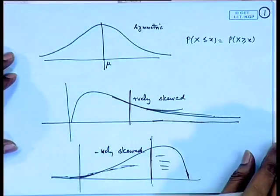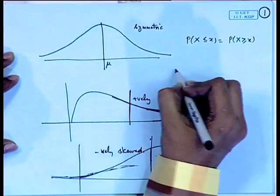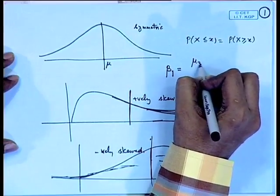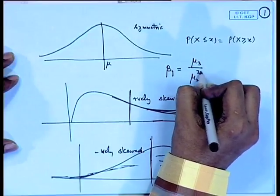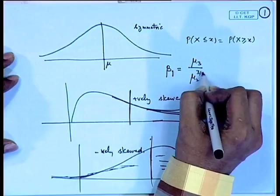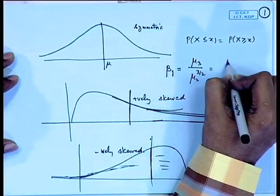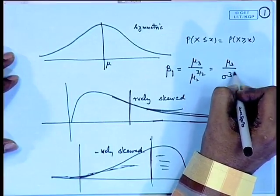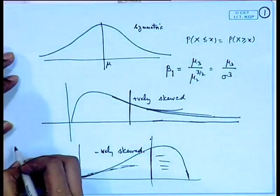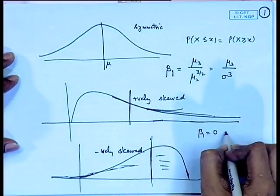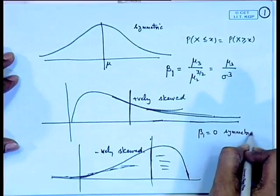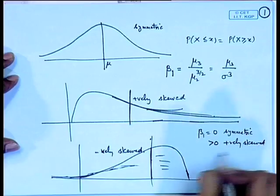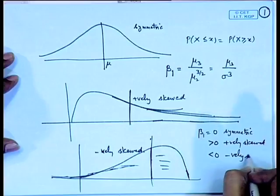A measure for skewness can be defined as beta_1, which equals mu_3 divided by mu_2 to the power 3/2 — that is, divided by sigma cubed, where sigma denotes the standard deviation. This division makes it free from the units of measurement. If beta_1 is 0, we have symmetry. If it is greater than 0, it is positively skewed. If it is less than 0, it is negatively skewed.